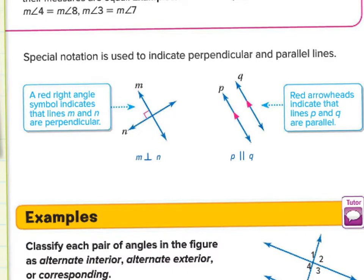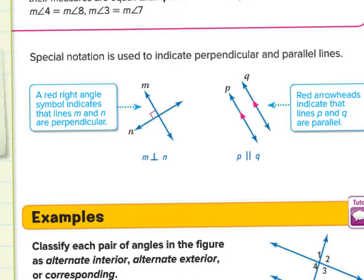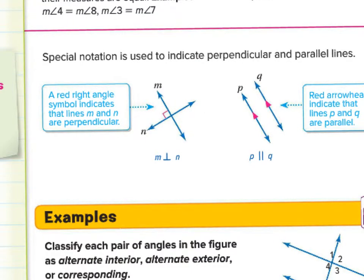A special notation is used to indicate perpendicular and parallel lines. The two little tick marks tell us the lines are parallel, while the 90 degree box tells us it's perfectly perpendicular.